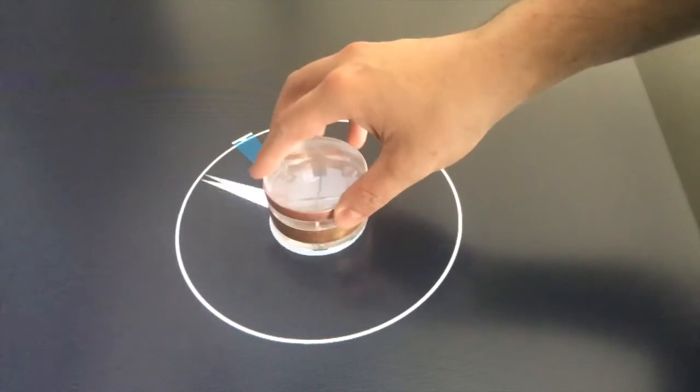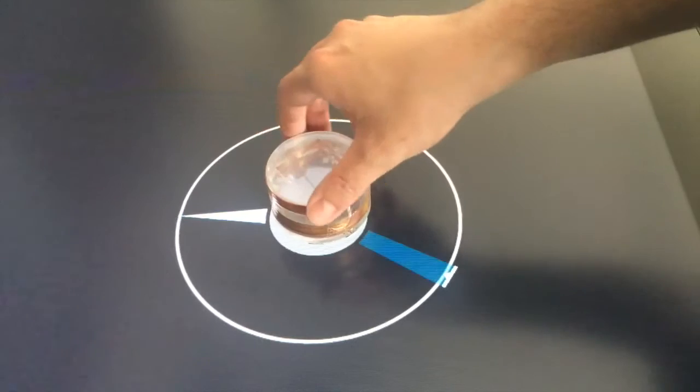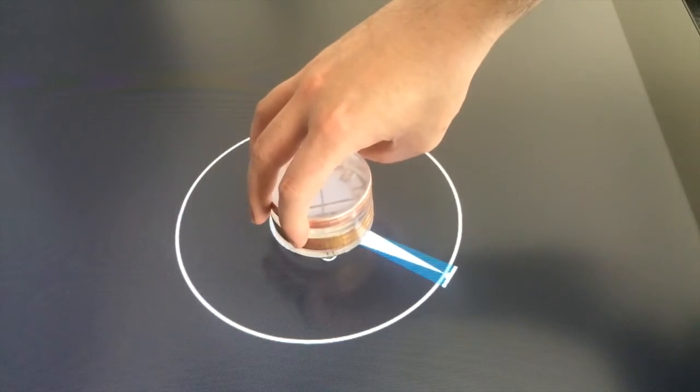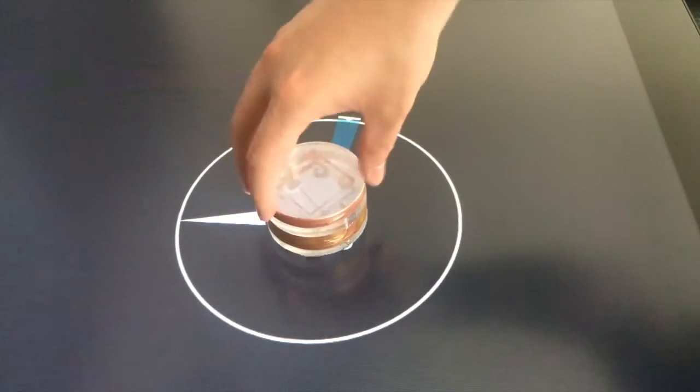In this paper, we conducted an experiment to compare user performance between tangible and virtual rotary knobs. The task is to turn the knob such that the white orientation indicator is inside the blue target area.